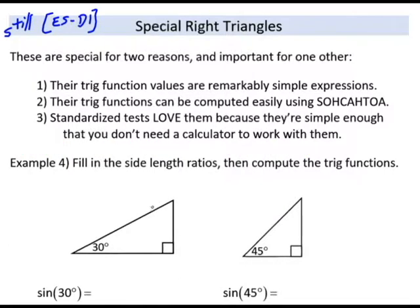First, we look at the 30-60-90 triangle. We will use both 30 degrees and 60 degrees in our trig evaluations in a moment. But the ratios are, if the short side is 1, the hypotenuse will be 2, and the longer leg will be root 3. In the 45-45-90 triangle, we have 1, 1, root 2.